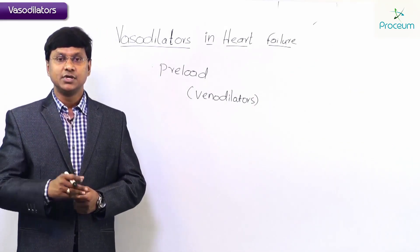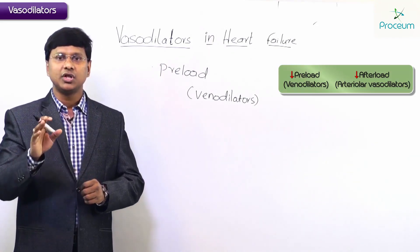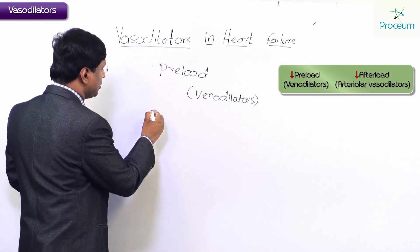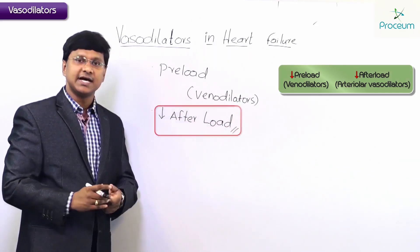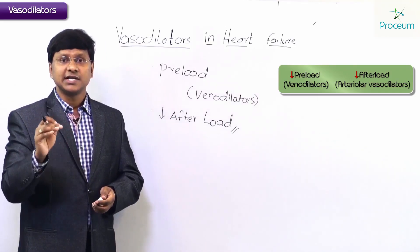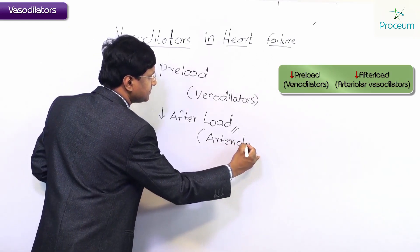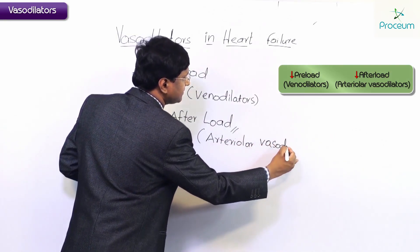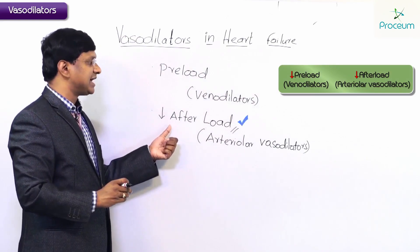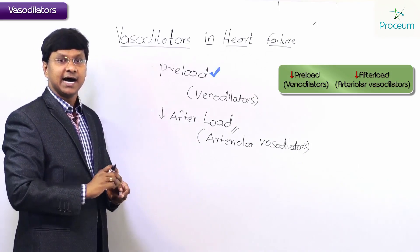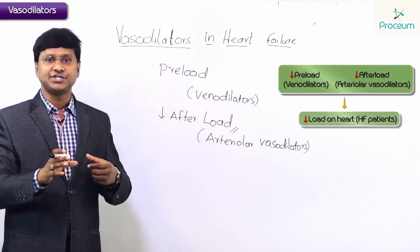In patients with heart failure, we want to reduce the load on the heart. We do this by reducing the preload and the afterload. Arteriolar vasodilators will reduce the afterload, while venodilators will reduce the preload on the heart. By reducing both, the overall load on the heart is reduced in patients with congestive heart failure.